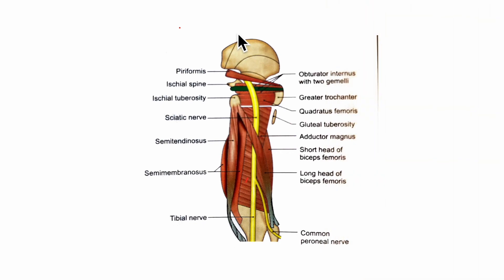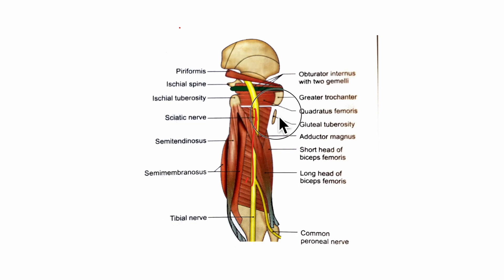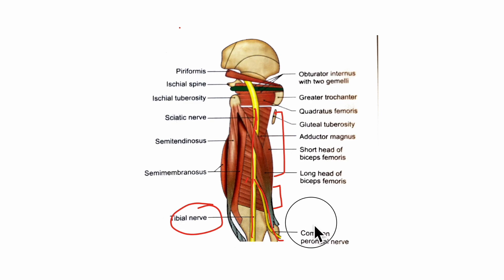Now let us look at the relations of the sciatic nerve in the thigh. The sciatic nerve enters the back of the thigh at the lower border of the gluteus maximus muscle. It runs vertically downwards up to the superior angle of the popliteal fossa, at the junction of the upper two-thirds and lower one-third of the thigh, where it terminates by dividing into the tibial and the common peroneal nerve.